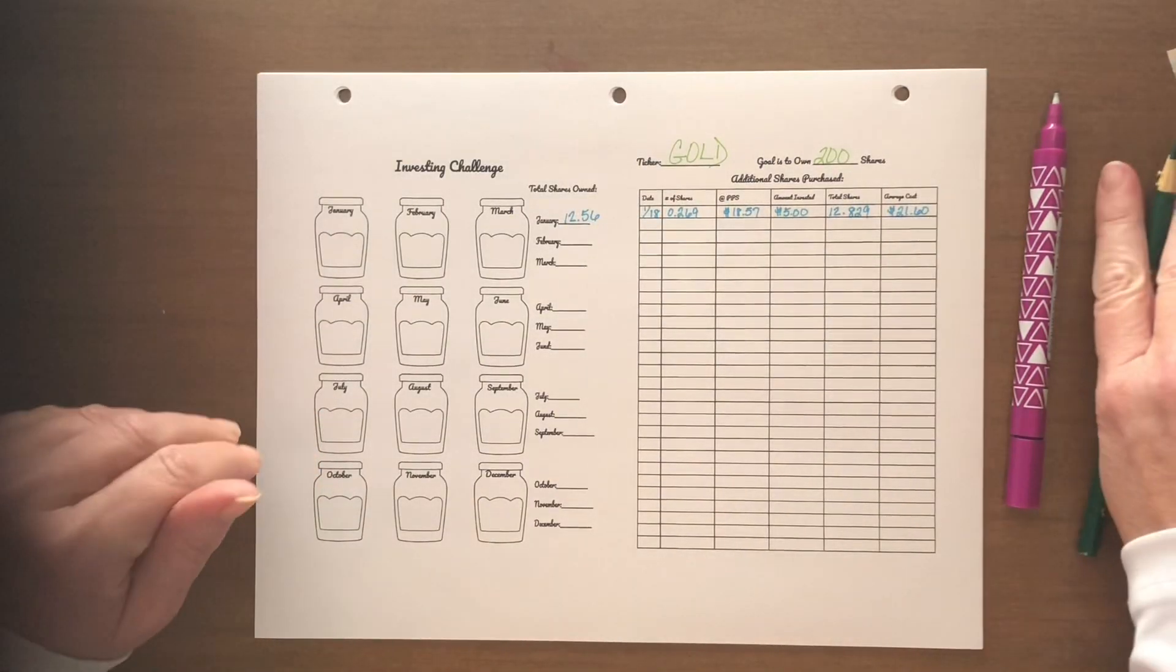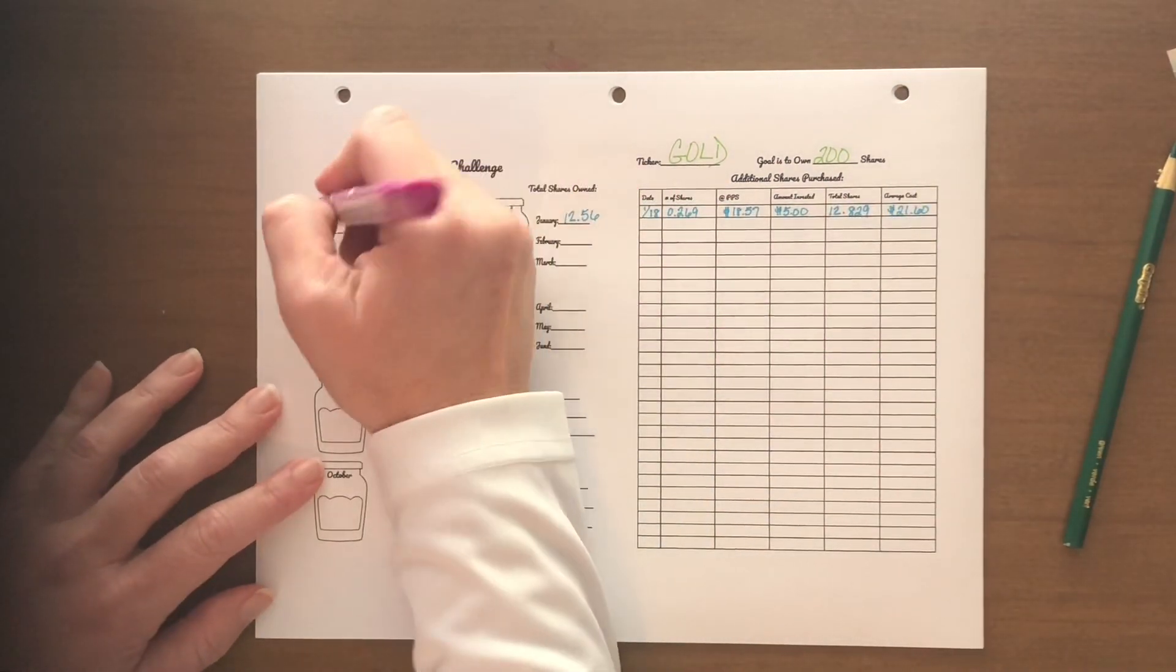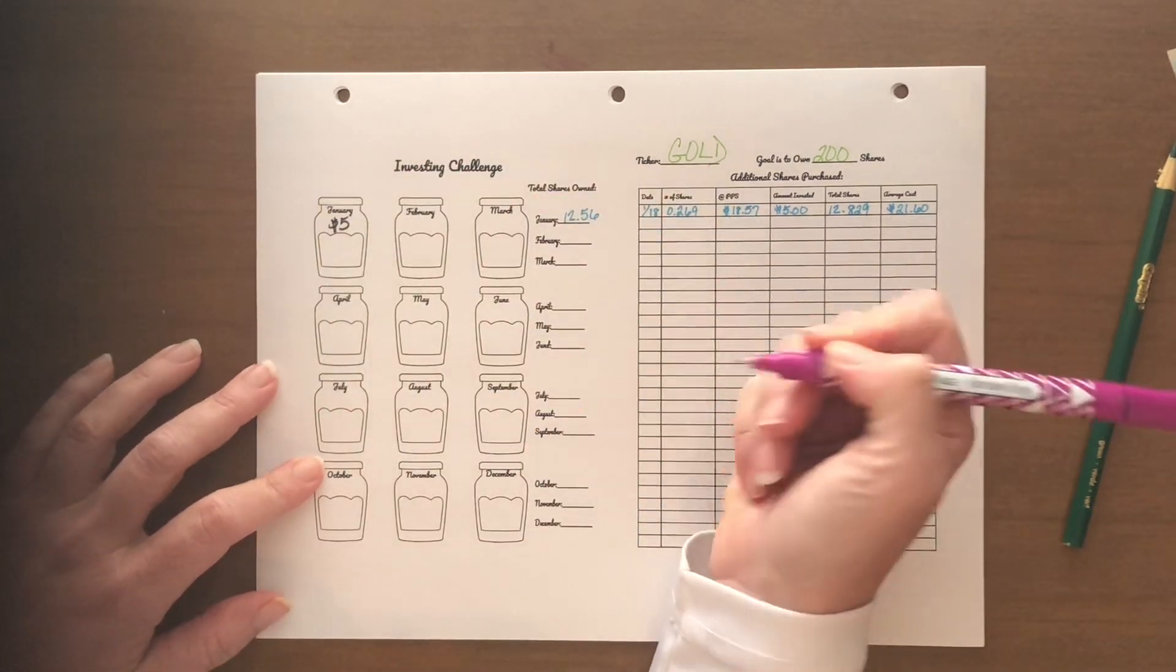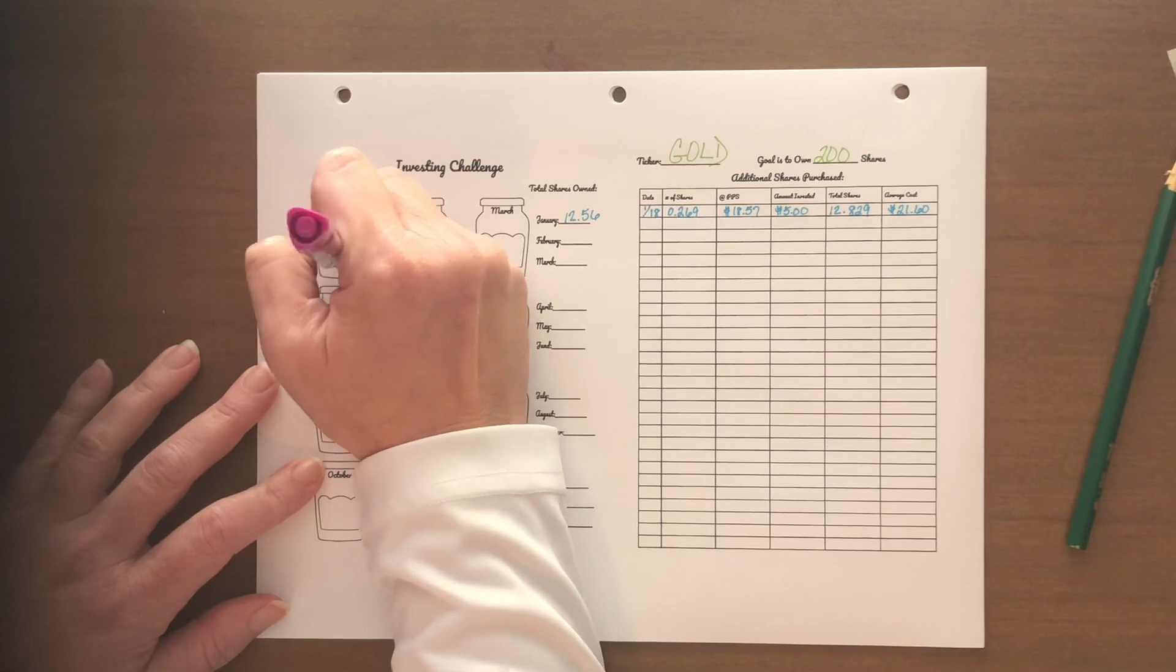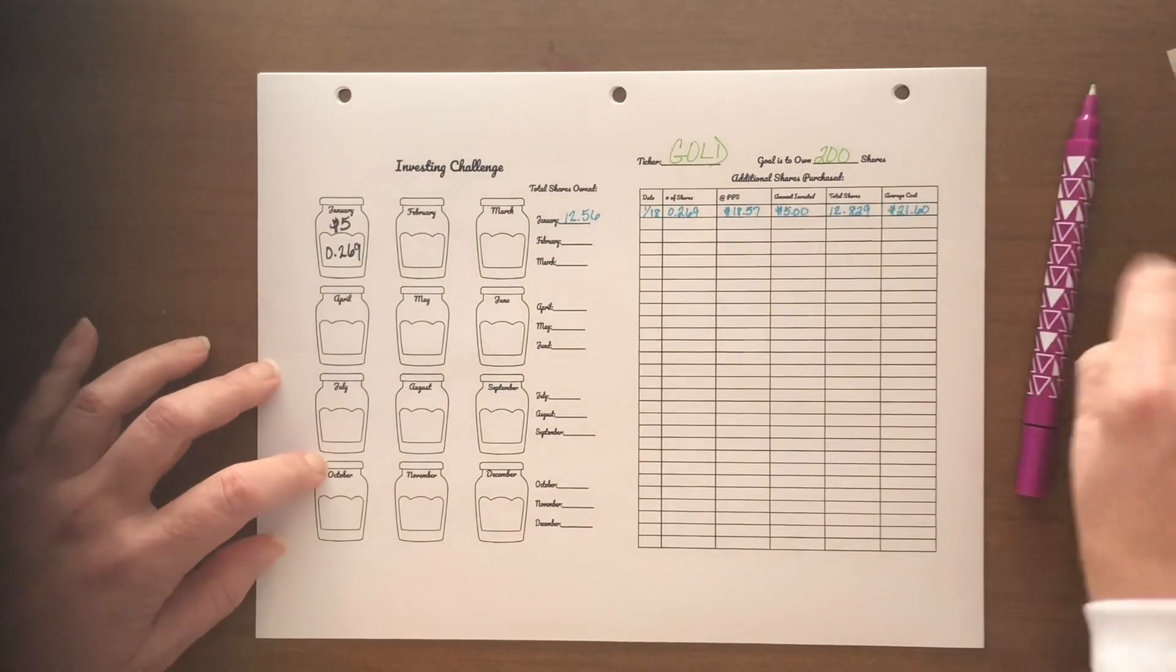Next up is GOLD. Now, I was on the fence whether or not I was really going to increase my position in GOLD. I decided I was going to. I put $5 in and was able to get 0.269 shares, so just over a quarter of a share.